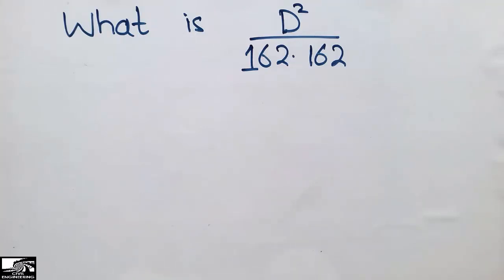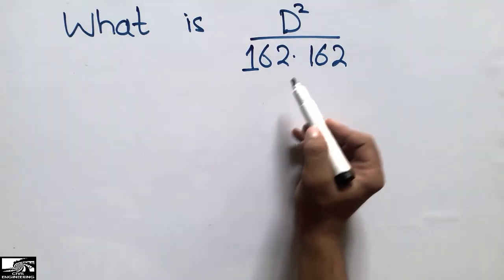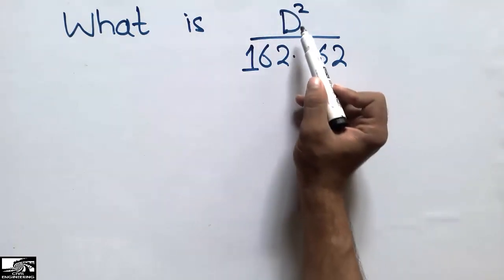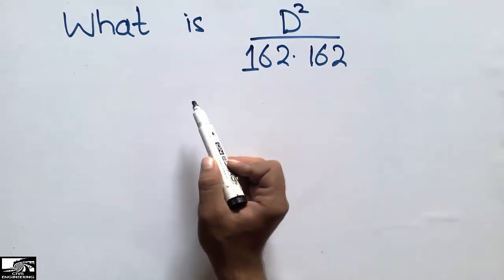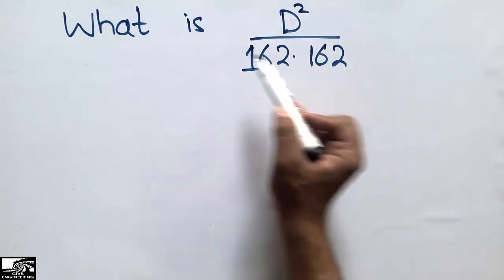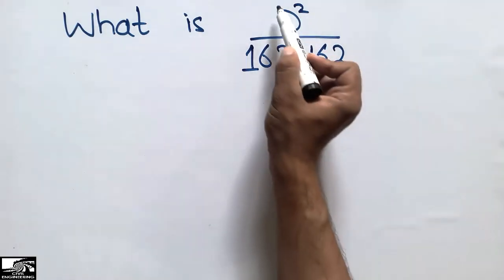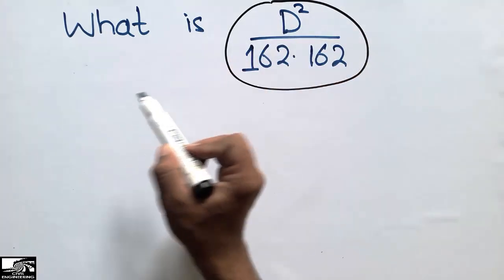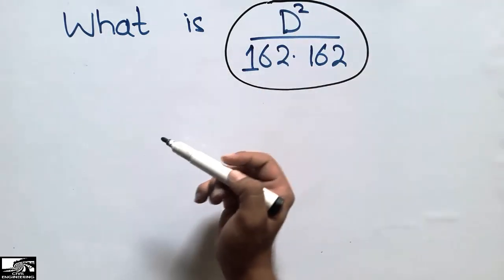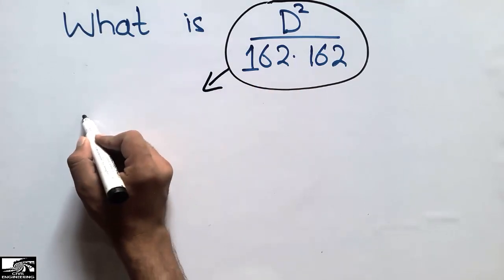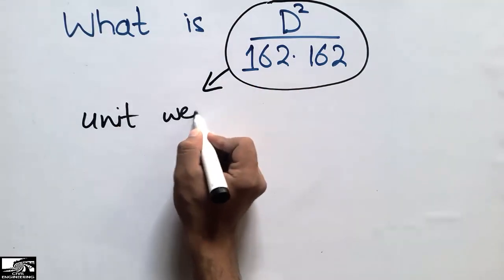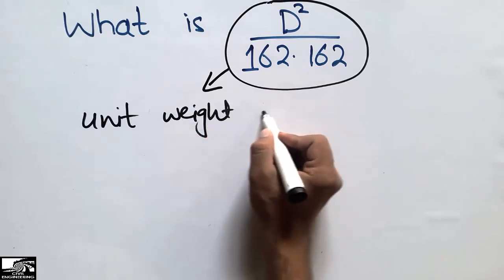Hello guys, welcome back to the Seven Engineering YouTube channel. Please subscribe for daily Seven Engineering videos. Today we are going to discuss the formula D squared divided by 162.162 — what is this formula and why we use it. This formula is very important in calculating the quantity estimation and is used to find the unit weight of different steel bars.